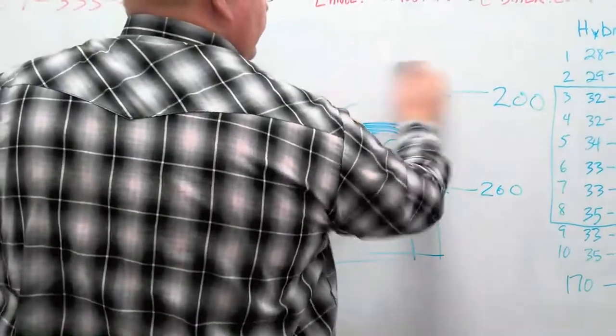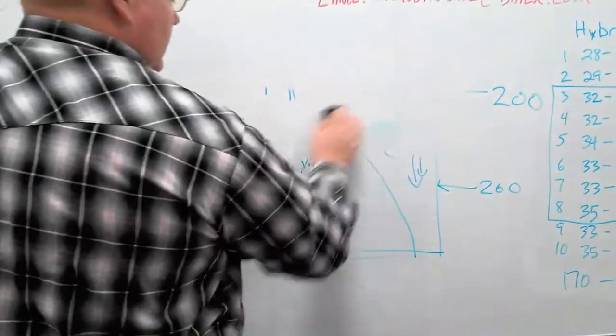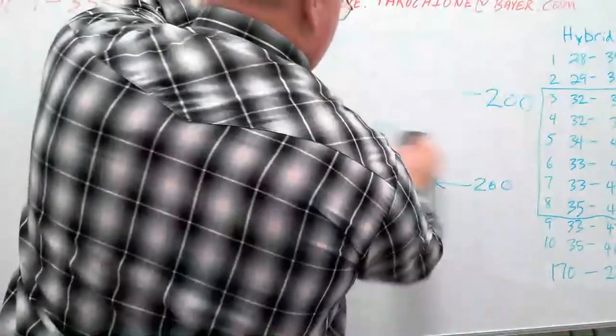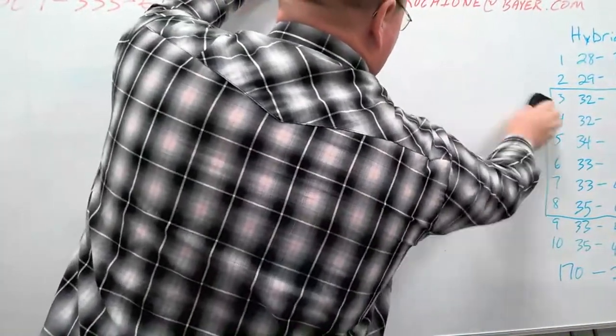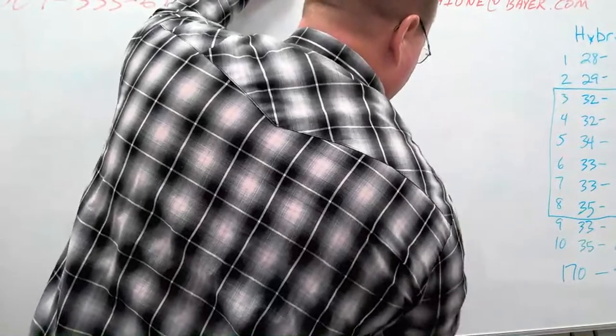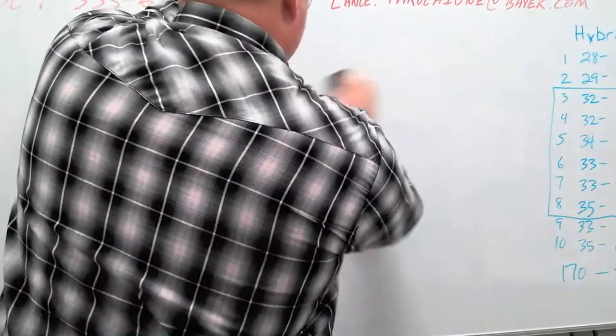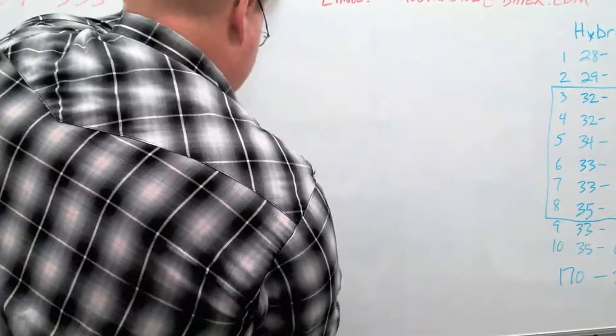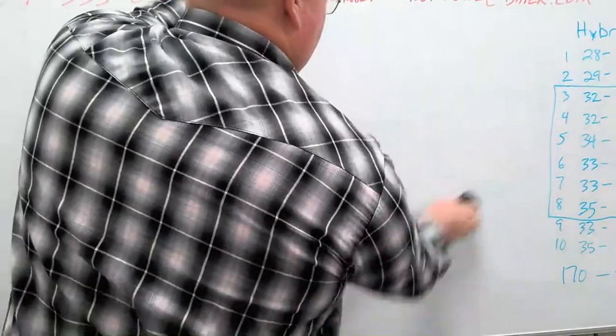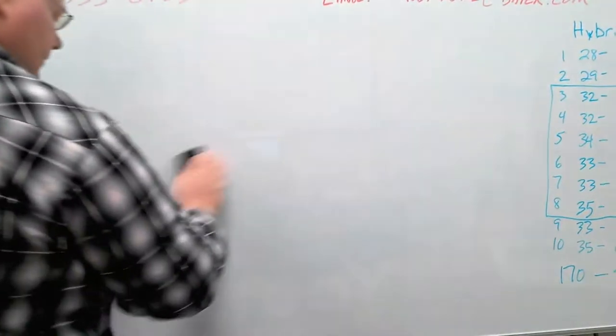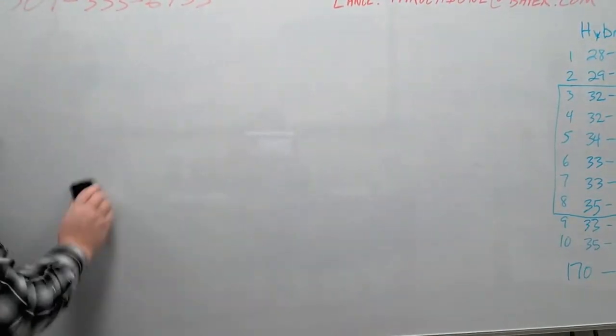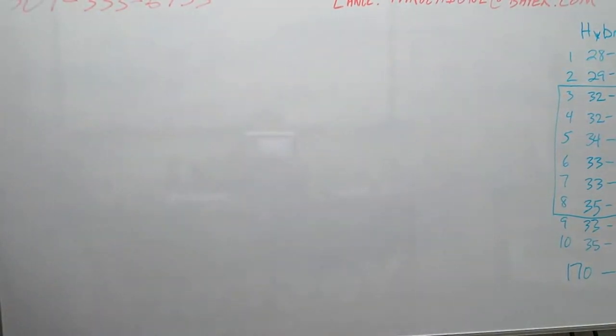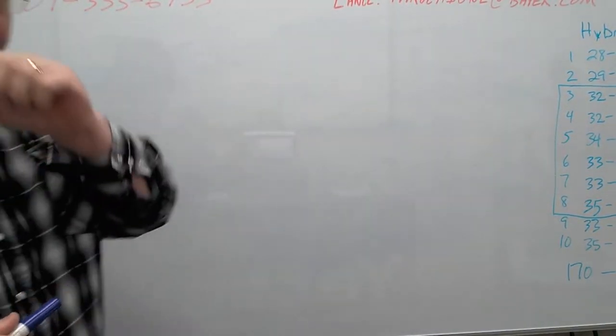If you planted this whole field at 37,000, you'd be over-planting in region A, slightly over-planting in region B, slightly under-planting in region D, and significantly under-planting in region C. Adam, I'll pause there while I'm doing some erasing. Any thoughts or questions or comments?